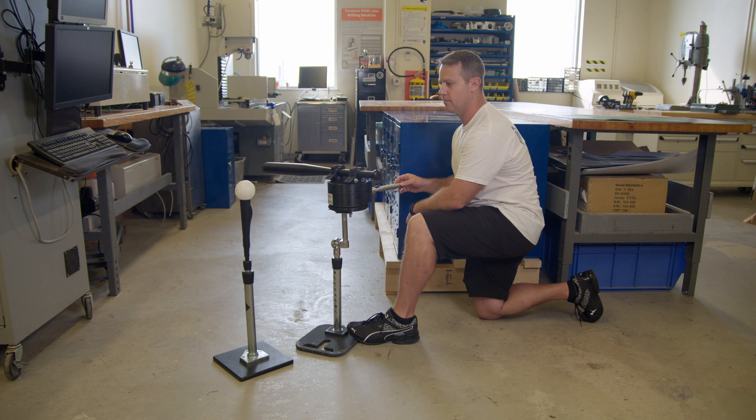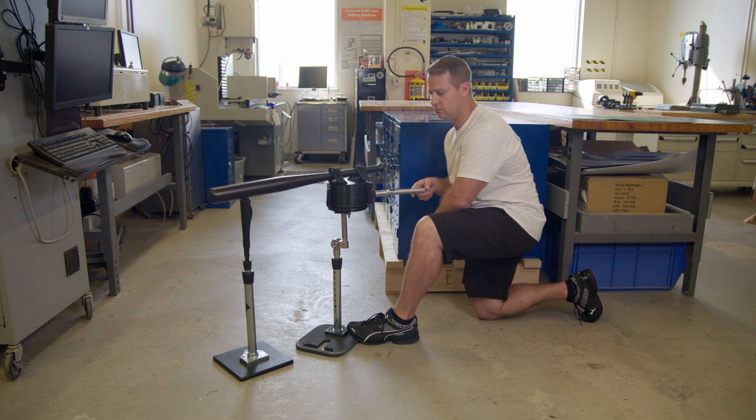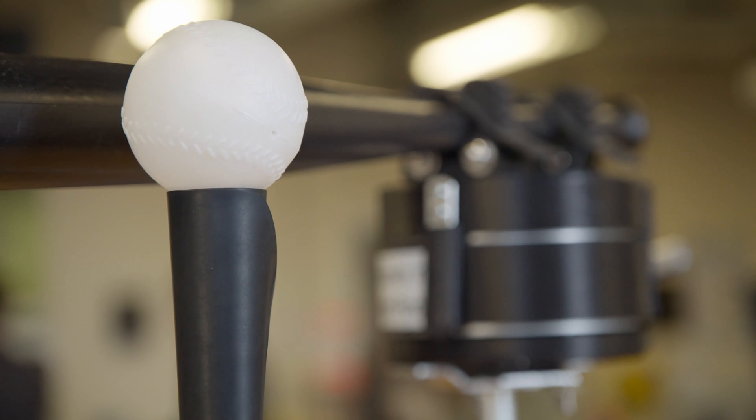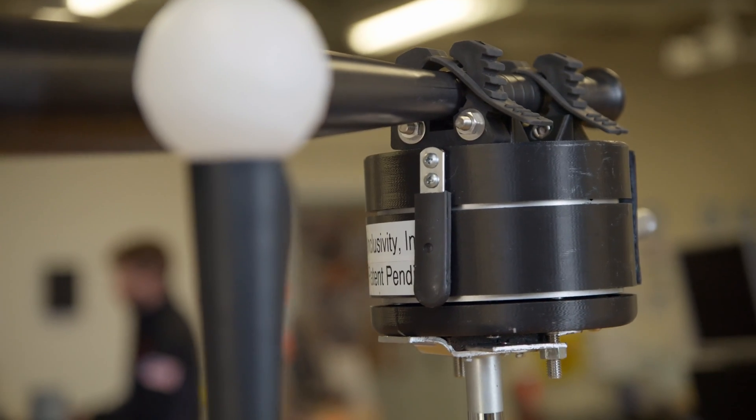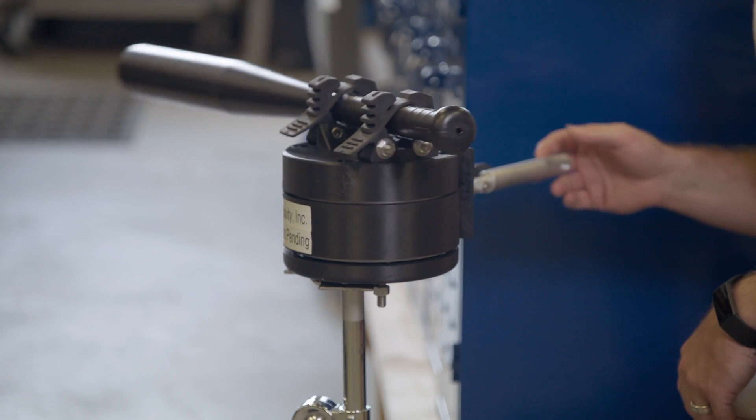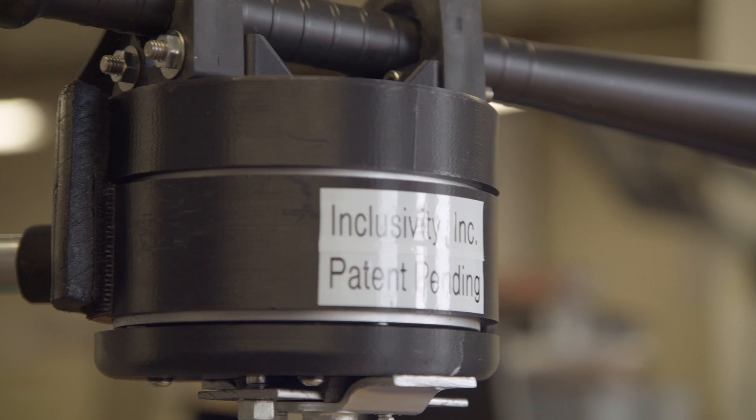Inclusivity Incorporated is a company that develops adapted fitness and sports equipment. Those with disabilities and special needs often have less strength and less ability especially in the upper limbs. The students at RIT 3D printed the gears in our product.